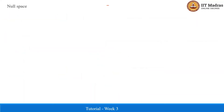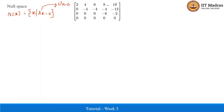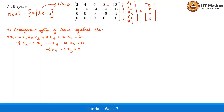Now let us find the null space of A, which consists of solutions to Ax equal to 0. Finding N of A is equivalent to solving Ux equal to 0, where U is the upper triangular echelon matrix formed earlier — solving four equations in five unknowns. The pivot elements 2, minus 4, and minus 6 correspond to columns 1, 2, and 4, so the pivot variables are x1, x2, and x4, while x3 and x5 are free variables.